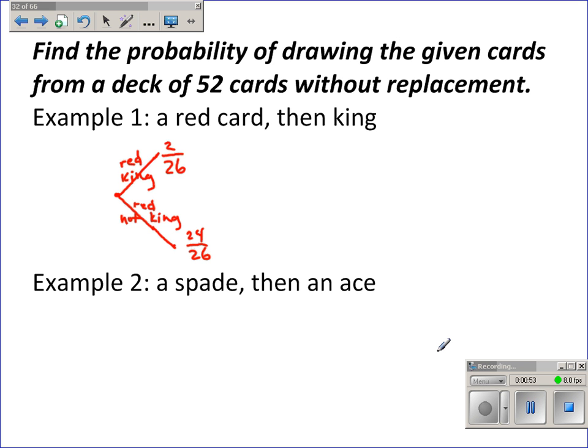Now, our next card being a king will depend on whether or not we've drawn a king previously. So, from here, if I drew a king the first time, then there will be 3 kings left out of my deck of 51 cards. Right, I drew one already. And the remaining 48 cards are not kings.